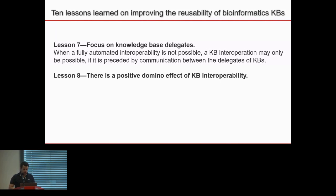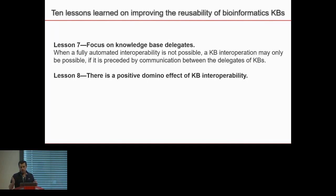The eighth lesson is that there is a positive transitivity effect of knowledge base interoperability. For example, BG interoperates with Wikidata, Wikidata interoperates with Wikipedia, and by extension BG also interoperates with Wikipedia. This makes your work easier. Additionally, having established one interoperable approach with a third-party knowledge base potentially allows you to reuse that approach for others that interoperate similarly.